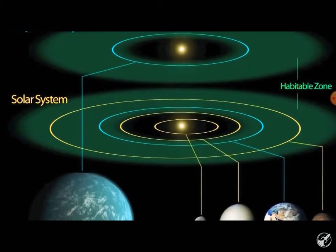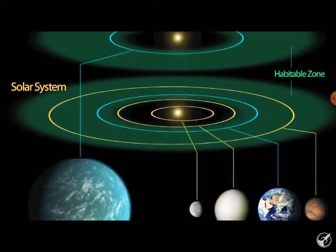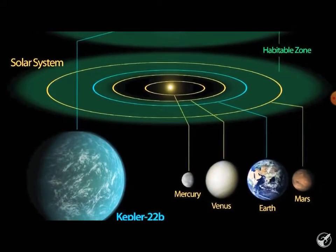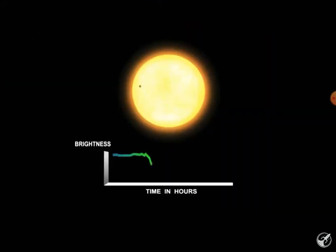The parent star, Kepler-22, is very similar to our sun. Classified as a sun-like G-type star, it is very dim as seen from Earth, and measurements of dips in light as the planet passes in front are very difficult to make.